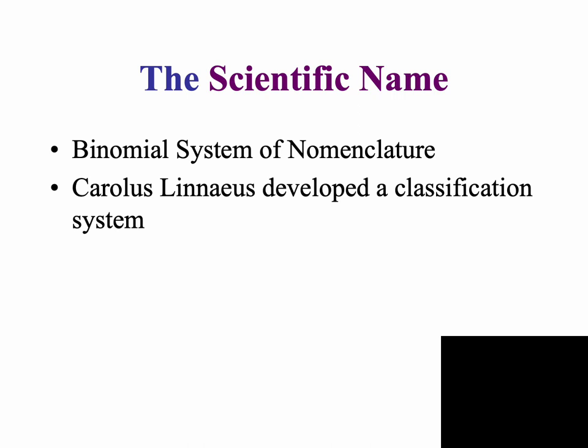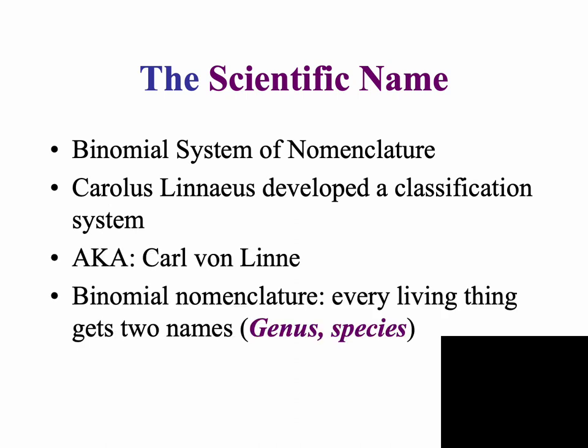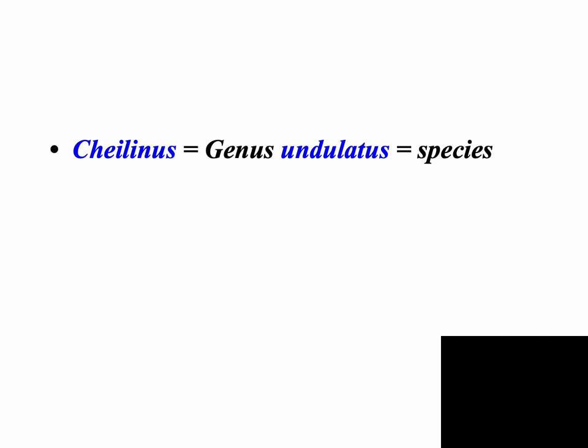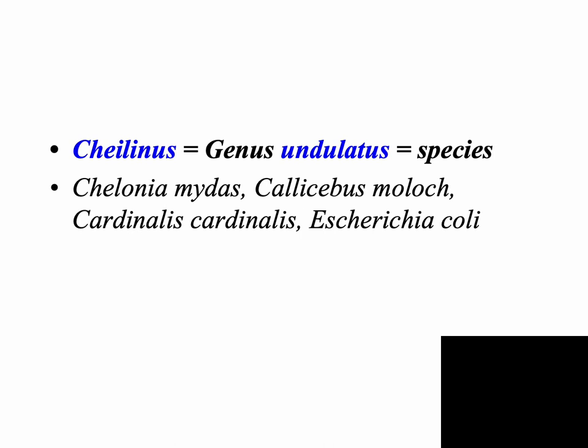Carl von Linnaeus — who goes by a lot of different names himself — created this system of naming, perhaps because he had so many names too. This two-name system goes down to our two most specific clades: the genus and species groups. Every species has one specific name — the genus followed by the species. So for my friend here, Cheilinus undulatus: Cheilinus is the genus name and undulatus is the species name. Other examples include Chelonia mydas, Callicebus moloch, Cardinalis cardinalis, and Escherichia coli.